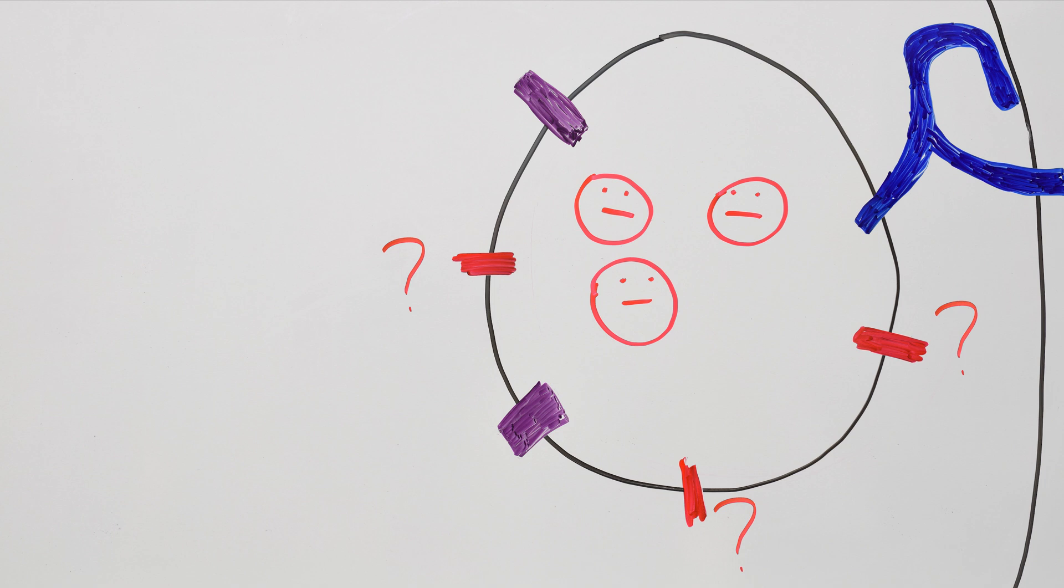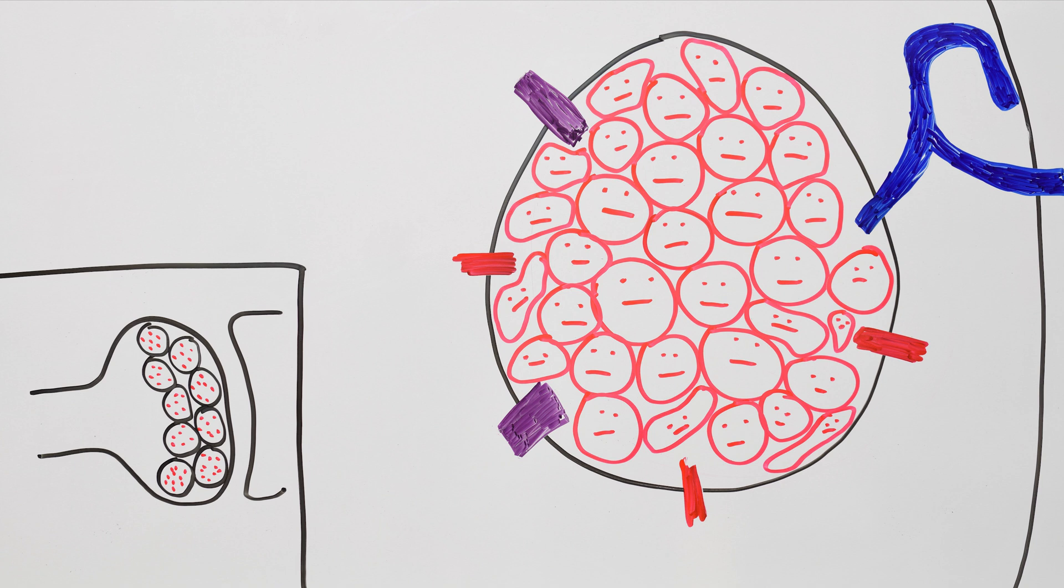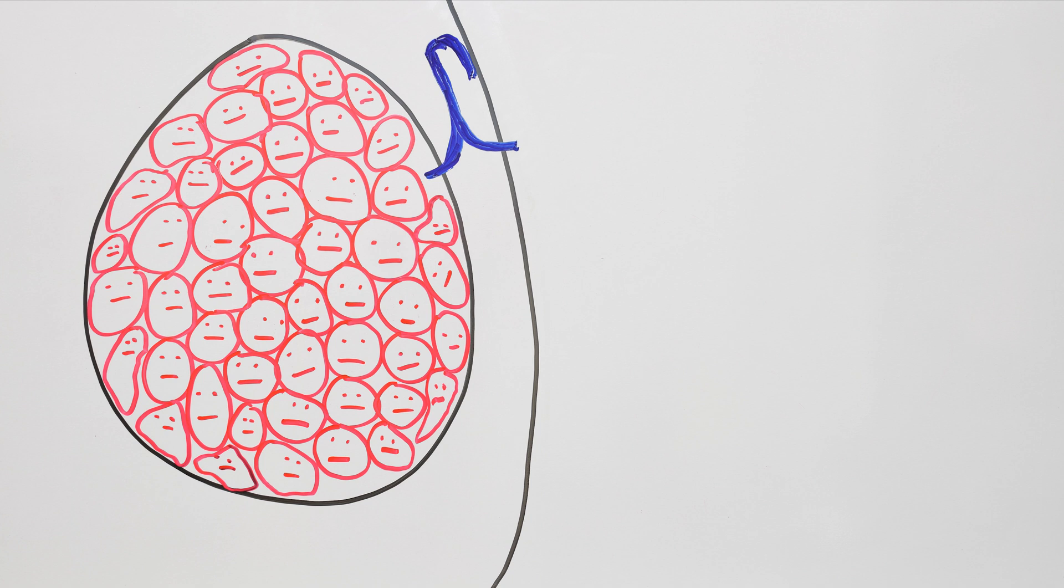Each synaptic vesicle packed thousands of neurotransmitter molecules, and a number of vesicles, anywhere between a couple to a few dozen, waited by the presynaptic wall, either attached to it or floating right behind. Inside them, the neurotransmitters crowded together, nervously waiting for the action to start.